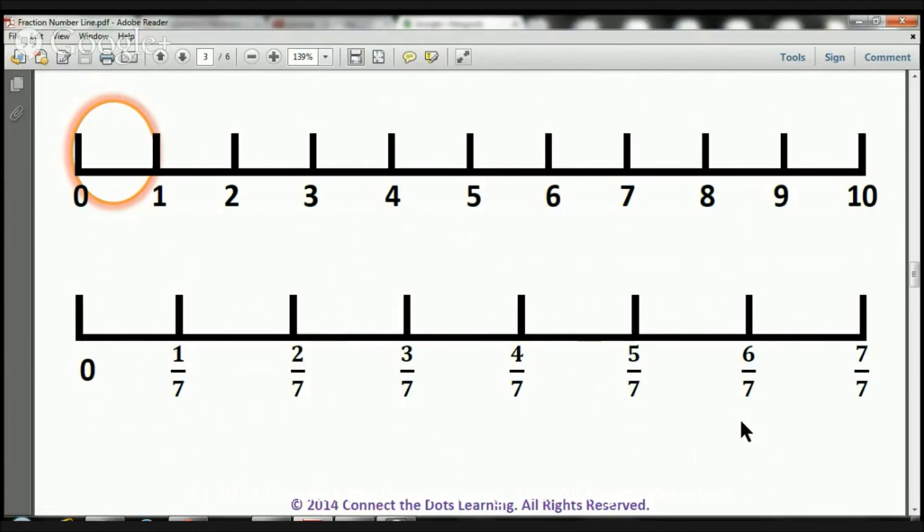From 0 all the way to here, we've got 7 7ths, 1, 2, 3, 4, 5, 6 pieces there. From 0 all the way to here, we've got 7 7ths, 7 pieces.